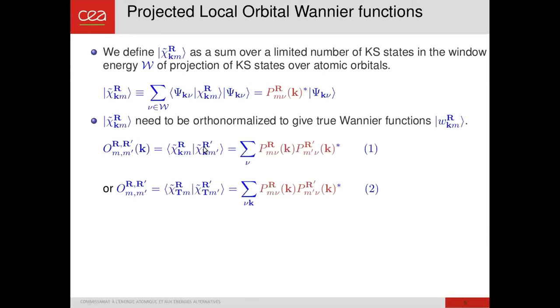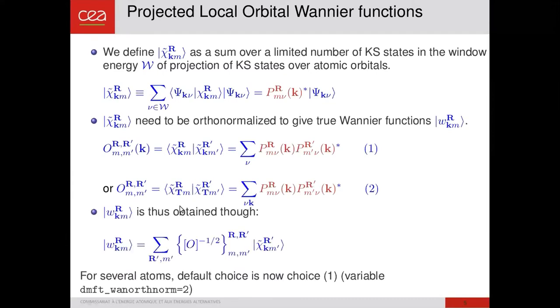There are two ways to do this orthonormalization, either a k-space orthonormalization or a real space orthonormalization. And it appears that if orbitals are very localized, the two are rather similar. If orbitals are a little bit delocalized, we can show that in the case where we have several atoms, the first choice is better. And so when you have chosen the way you are to orthogonalize it, you can compute the Wannier function with this formula.